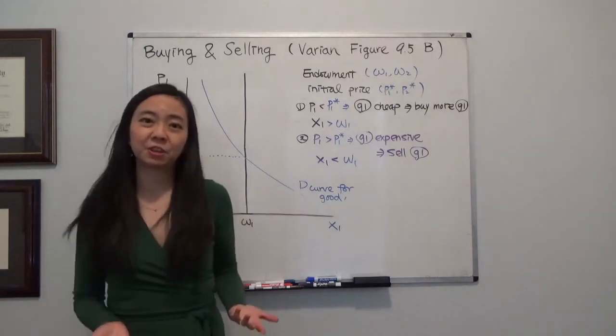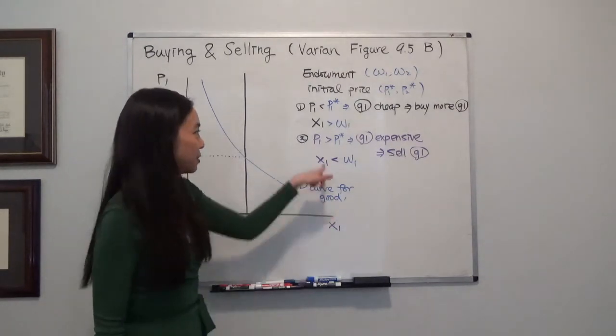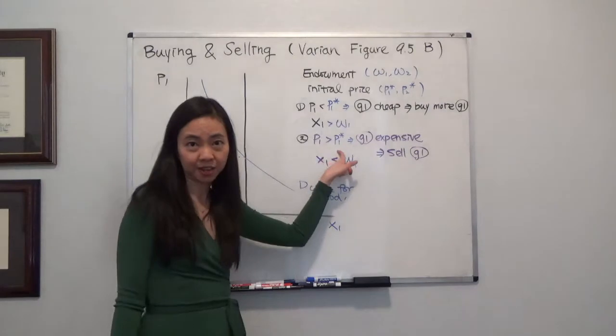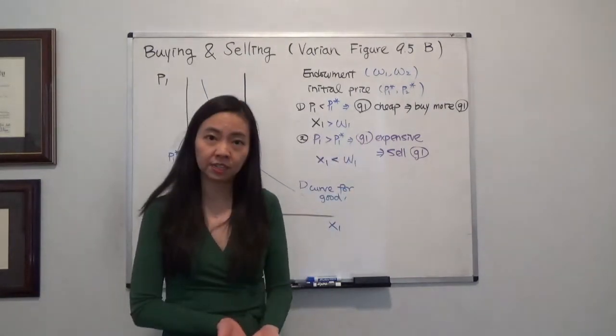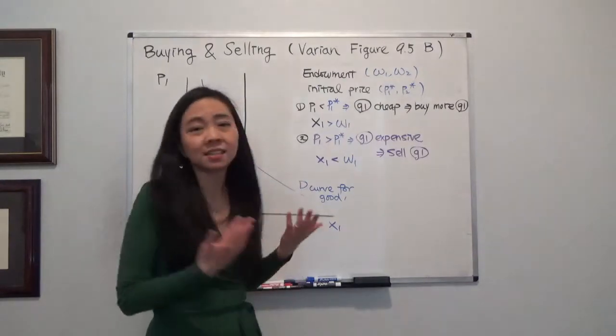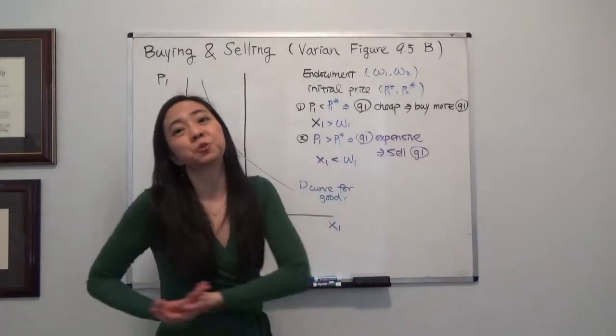What happens if the price of good 1 goes up? So suppose P1 is higher than the initial price. That means good 1 has become relatively expensive. So it makes sense for me to sell my good 1 to buy more good 2.